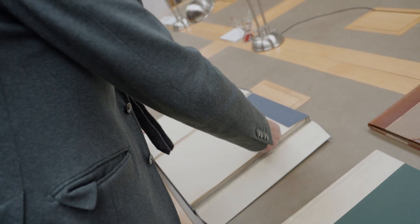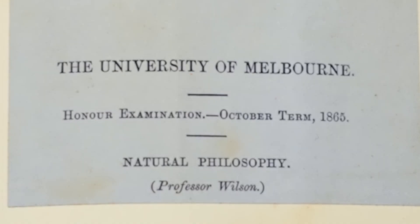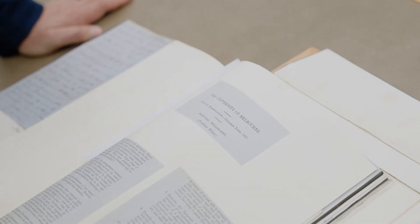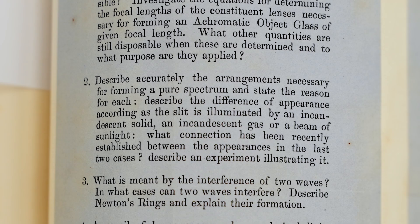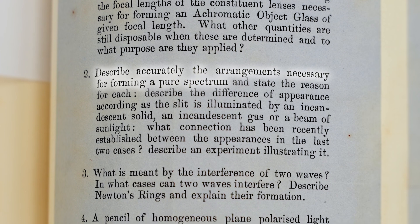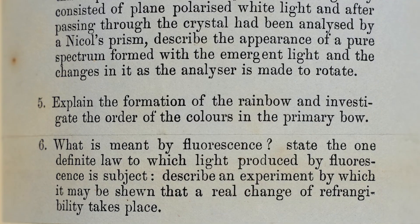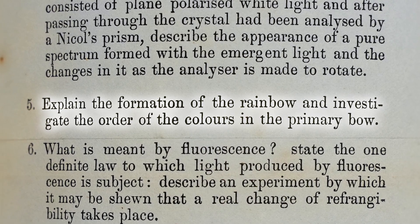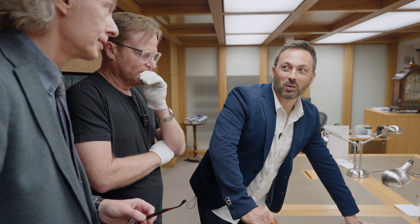This is an examination paper from the University of Melbourne — 1865, October term, natural philosophy. We have a series of questions here, and they're all about colours and rainbows. We've got reference to Sir Isaac Newton: 'Describe accurately the arrangements necessary for forming a pure spectrum.' 'What is meant by the interference of two waves?' And question number five: 'Explain the formation of the rainbow and investigate the order of the colours in the primary bow.' So that's what we'll be doing now — investigating those colours.